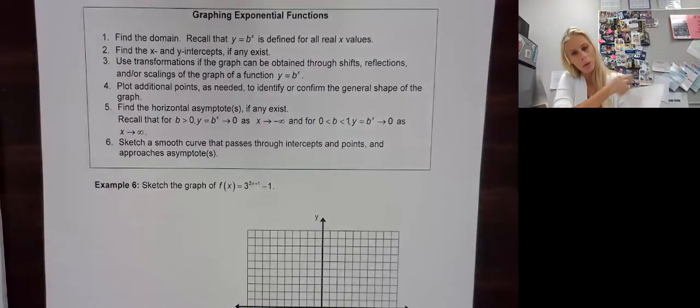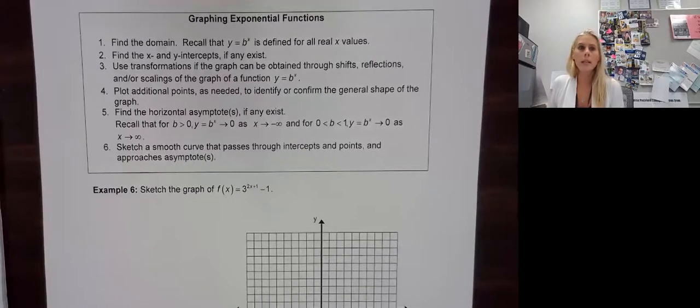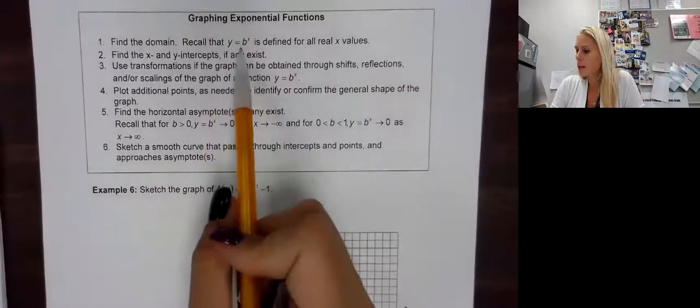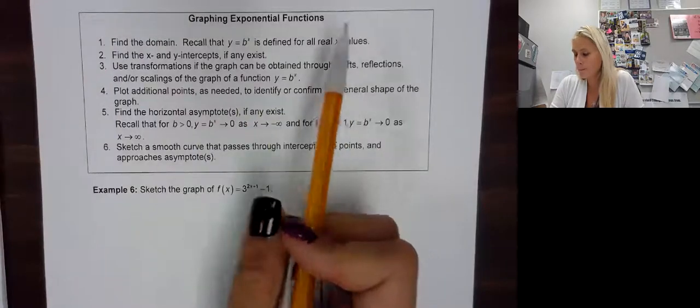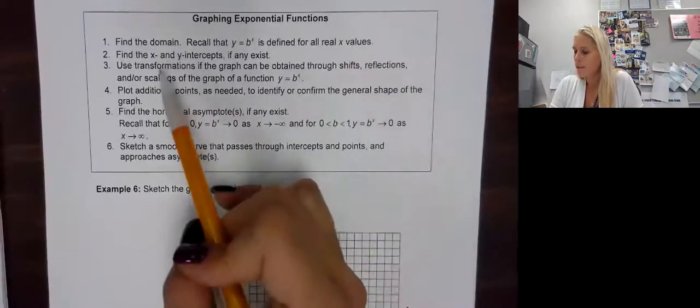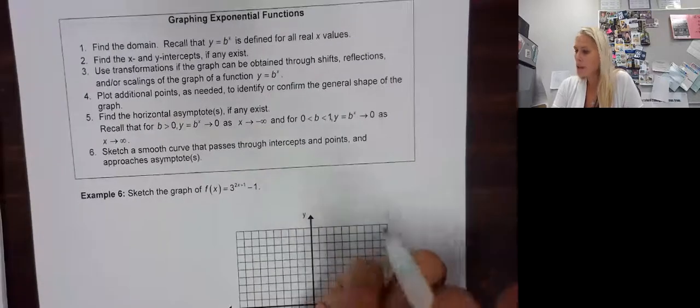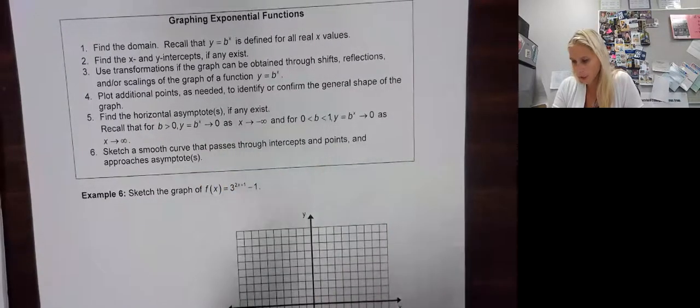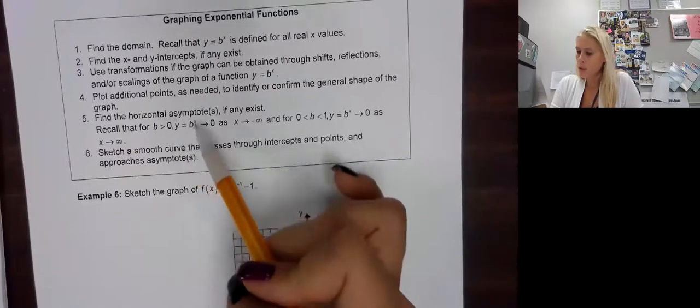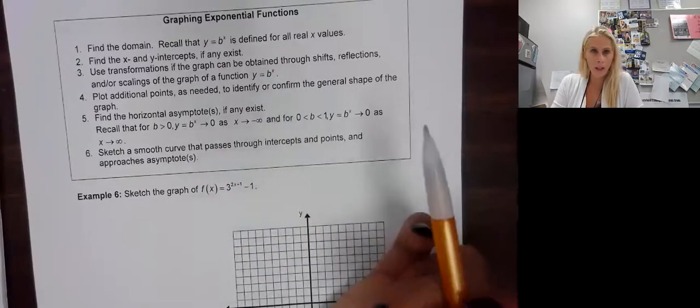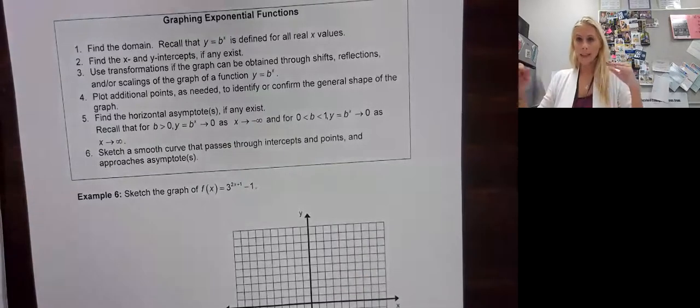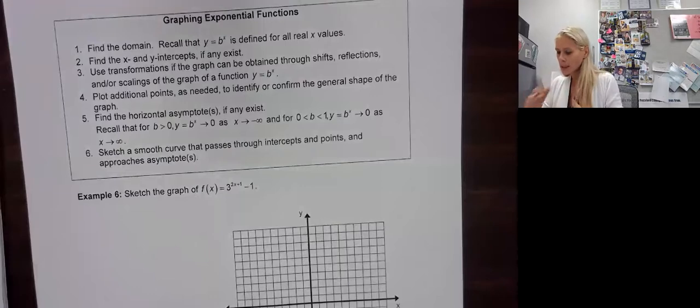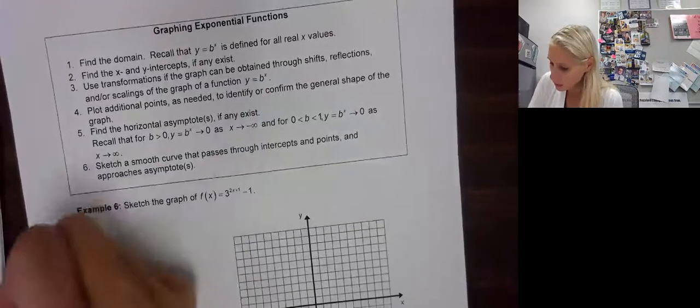Alright. A couple more. Let's do some graphing. Graphing exponential. So a couple things. Find the domain. Recall that y equals b to the x is defined for all x values. We need to find the x and y-intercepts. We have to talk about transformations. Plotting points if we need to make sure things are correct. Think about the horizontal asymptote. Because remember in an exponent, usually we start out with our asymptote being at 0. And then we're going to sketch our curve.